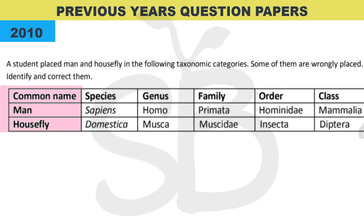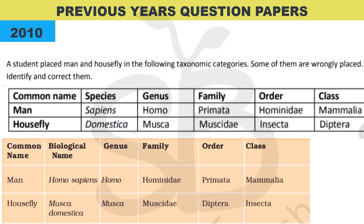From the 2010 improvement exam, questions on Man and Housefly classification. The human scientific name is Homo sapiens — Homo is the genus name, sapiens is the species name. The human family is Hominidae, Order Primata, Class Mammalia. The housefly scientific name is Musca domestica — Musca is the genus name, domestica is the species name. The housefly family name is Muscidae, Order Diptera, Class Insecta.